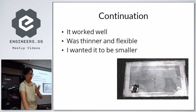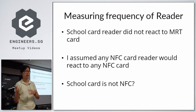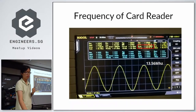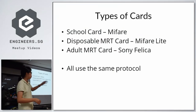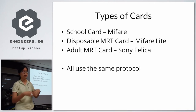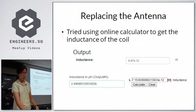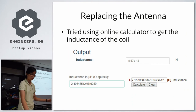Before moving on, I realized the school card reader did not react to my transplanted card, which I thought was quite strange because I assumed any NFC card reader would react to any NFC card — which is apparently not true. So I measured the frequency of the school card reader with an oscilloscope and it was indeed 13.56 MHz. I looked up the different kinds of cards and found that the disposable MRT card does react to the school card reader — both my school card and the disposable MRT card are under MIFARE, whereas the normal adult MRT card uses a different technology, though they all use the same communication protocol.